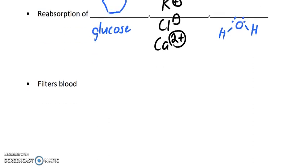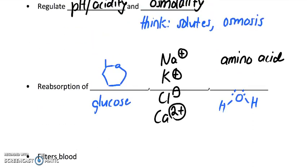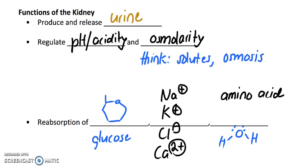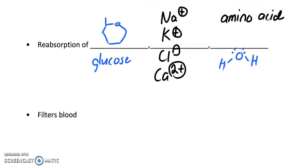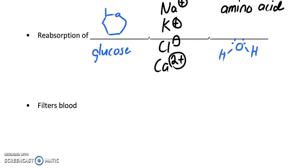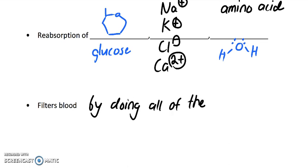This is how your kidneys filter blood — by doing all of the above: producing urine, regulating acidity and osmolarity, and taking in these important compounds.